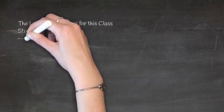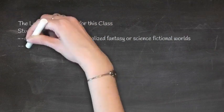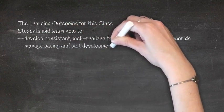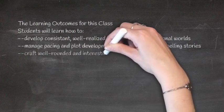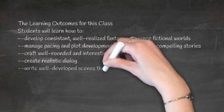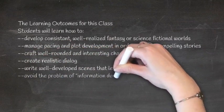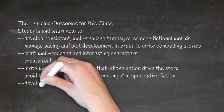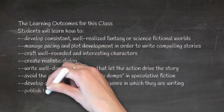The learning outcomes for this class: Students will learn how to develop consistent, well-realized fantasy or science fiction worlds, manage pacing and plot development in order to write compelling stories, craft well-rounded and interesting characters, create realistic dialogue, write well-developed scenes that let action drive the story, avoid the problem of information dumps in speculative fiction, develop a style appropriate to the genre in which they are writing, and publish their finished work.